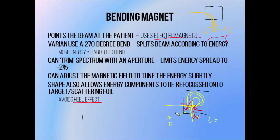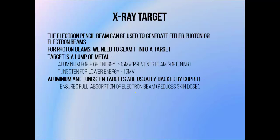Elekta linacs use a slightly different system known as a slalom design — a system of three different magnets that bends the beam in an S-shape. The electron beam that emerges from the bending magnet is quite thin, so we call it a pencil beam.